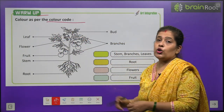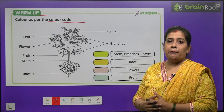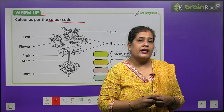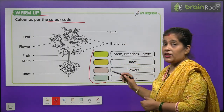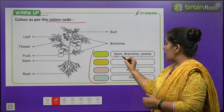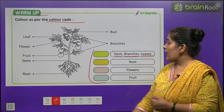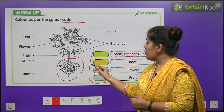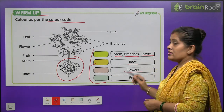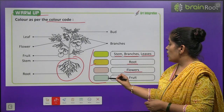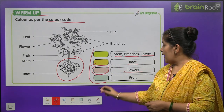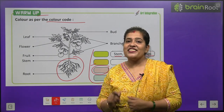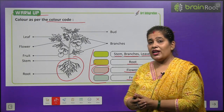Color as per the color code. Here we have a very beautiful plant picture and we will learn about different parts. Stem, branches, or leaves — you want to do yellow color. Then root — you have to do orange color. And next, flowers — flowers means phool — you want to do pink color. Then in last, fruit — fruit means phal — you have to do green color. You will do these exercises and it will be very beautiful.